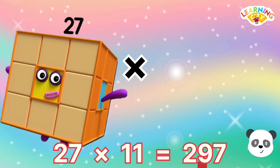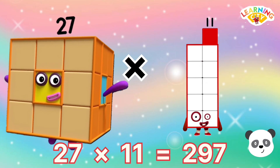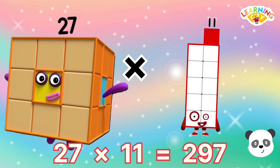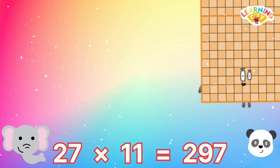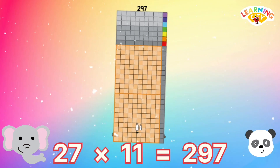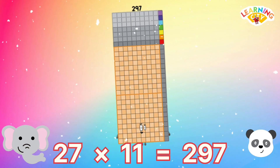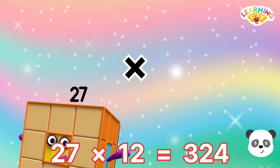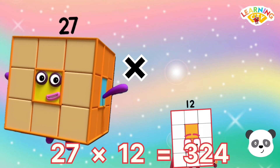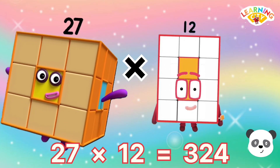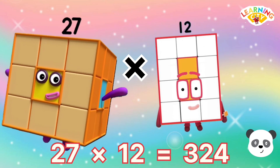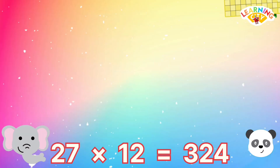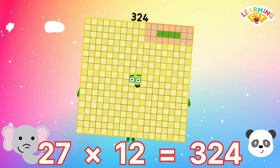27 multiply 11 equals 297. 27 multiply 12 equals 324.